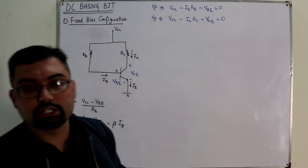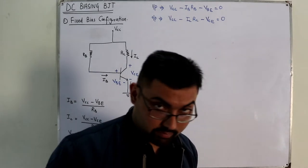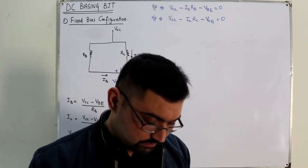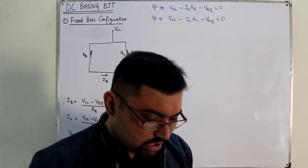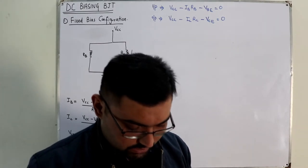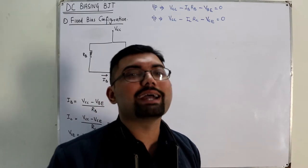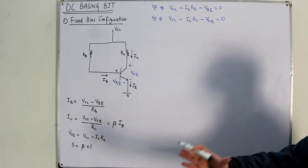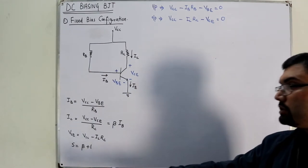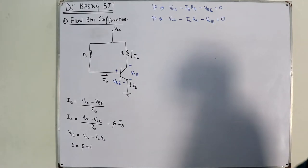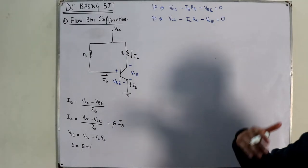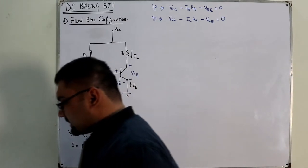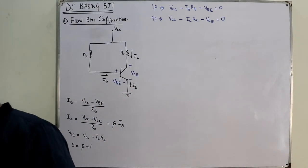The sensitivity factor S equals β+1 is a high value, which means this is not a stable BJT configuration. Ideally S should be zero, or practically a very small value. With a small change in temperature you get a large change in collector current — an undesired characteristic. We will see a much improved circuit in the next videos.